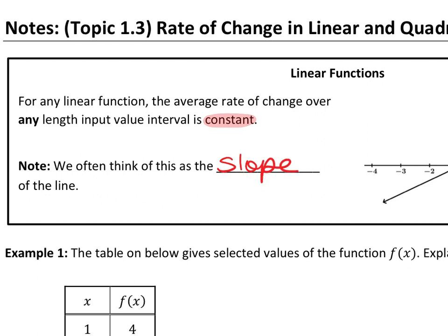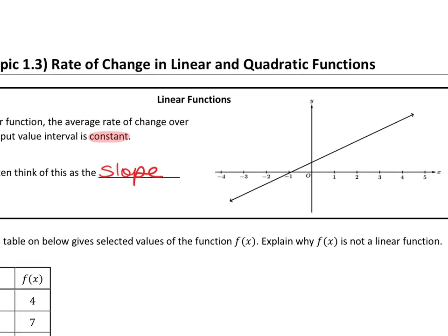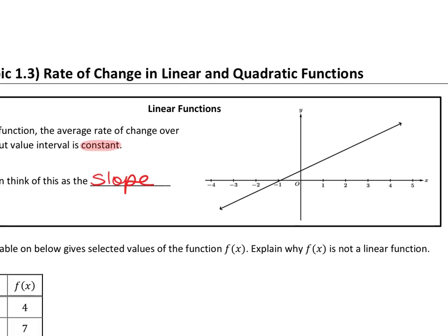Linear equations are the only ones that have constant slope, which is why before now you probably said the only graphs that have a slope are linear. They're the only graphs that technically have a constant slope, and that slope is the same over any interval.